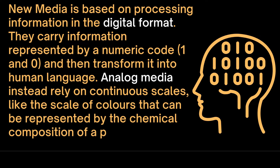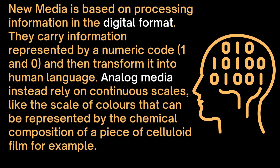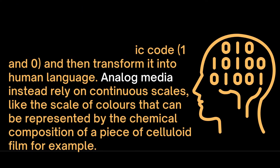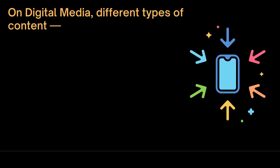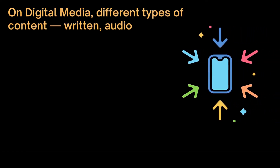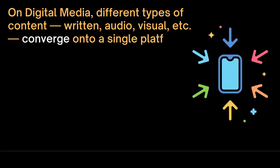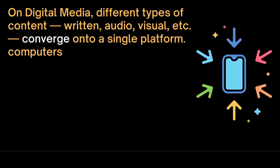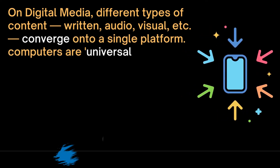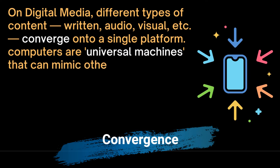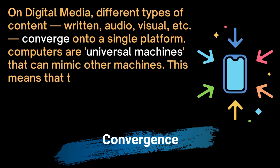Analog media instead rely on continuous scales, like the scale of colors that can be represented by the chemical composition of a piece of celluloid film, for example. On digital media, different types of content — written, audio, visual, etc. — converge onto a single digital platform.